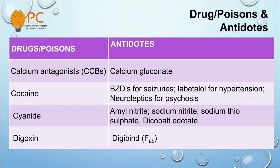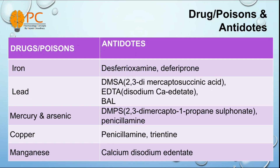And for digitoxin or digoxin overdose or poisoning, we can use Digibind for the digitoxin poisoning. And for iron poisoning, we can use desferrioxamine and deferiprone as antidote. And for lead poisoning, we can use DMSA, means 2,3-dimercaptosuccinic acid, as antidote. We can also use EDTA like disodium calcium edetate, and BAL, means British anti-lewisite, as antidote.